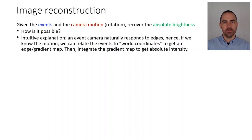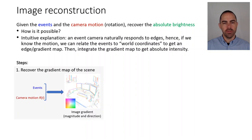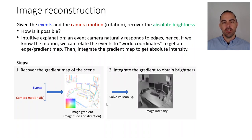Given the events and the camera motion, we would like to recover absolute brightness. The intuitive explanation is: the event camera naturally responds to edges, and if we know the camera motion we can relate these edges on the image plane to world coordinates in a mosaic, getting an edge map. We then integrate this edge map to obtain absolute intensity. So there are two steps: first, compute an image gradient map from the events and motion; second, use Poisson integration — solving Poisson's equation — to recover absolute intensity from that gradient. Basically it's doing a 2D integration.